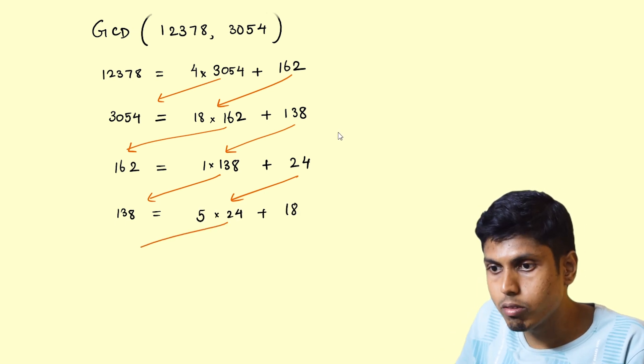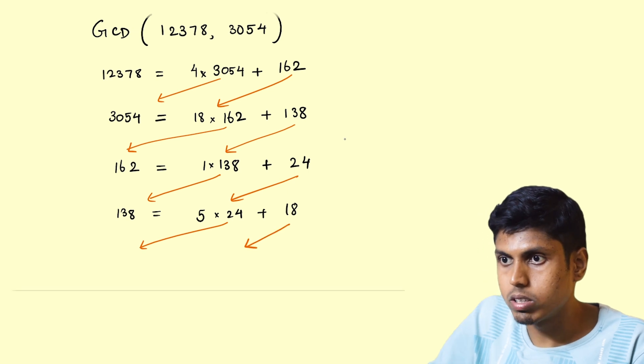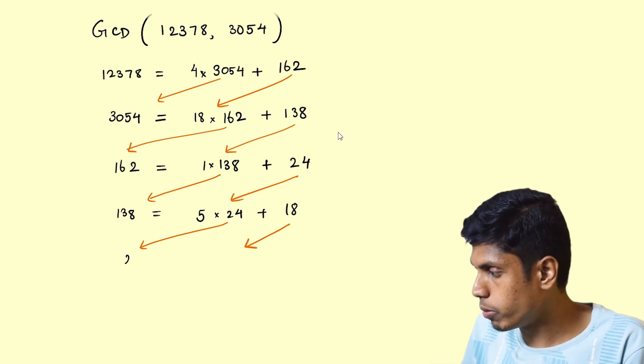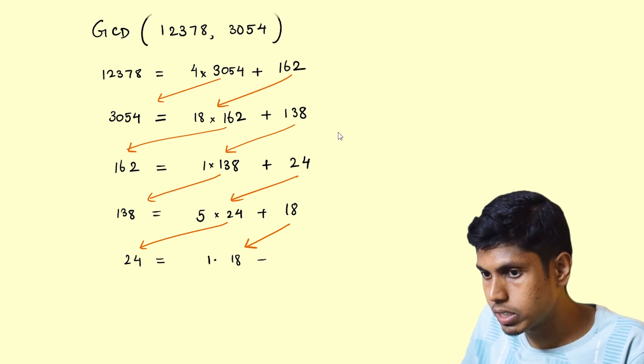Now if you proceed like this, you can see that 138 is 5 times 24 plus 18. And then we take 24 and 18 for the next step, and we perform the division algorithm to obtain 1 times 18 plus 6.